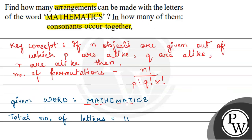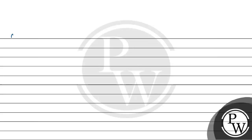Now, how do we find arrangements where consonants are together? First, let us write the consonants: M, T, H, C, S — and the vowels are A, A, I, E.